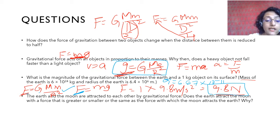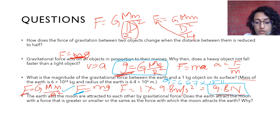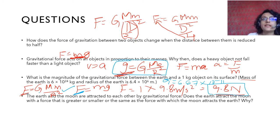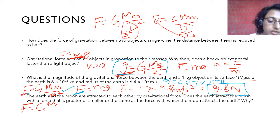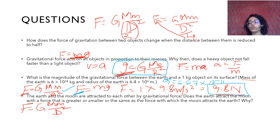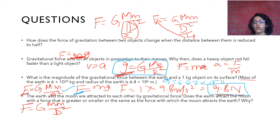The earth and the moon attract each other by gravitational force. Does the earth attract the moon with a greater, smaller, or the same force as the moon attracts the earth? The force of gravitation acting on two objects remains the same: F = Gm₁m₂/d², which is the force acting on both objects equally.